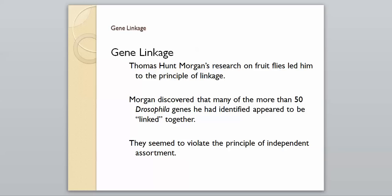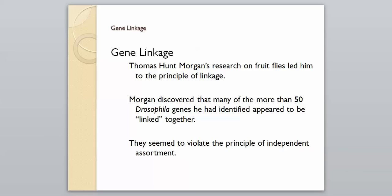Morgan discovered that many of the 50-plus fruit fly genes he had identified appeared to be linked together, seeming to violate the principle of independent assortment. What he observed was that if a fly has red eyes, it almost always has normal wings, whereas if a fly has gray eyes, it almost always has what they call dumpy wings — wings that aren't fully developed. So were these genes in fact linked together, violating the principle Mendel came up with?